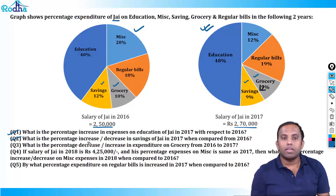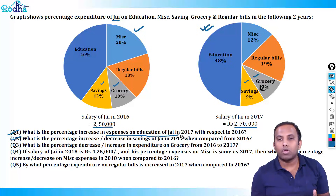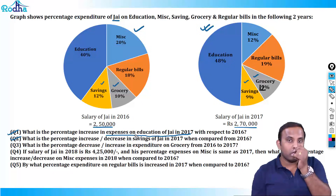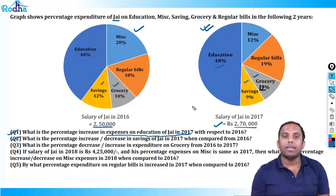The second question is: what is the percentage increase or decrease in savings of J in 2017 when compared to 2016? For the first question, J spent 48% of 2,70,000 in 2017, and in 2016 J spent 40% of 2,50,000.